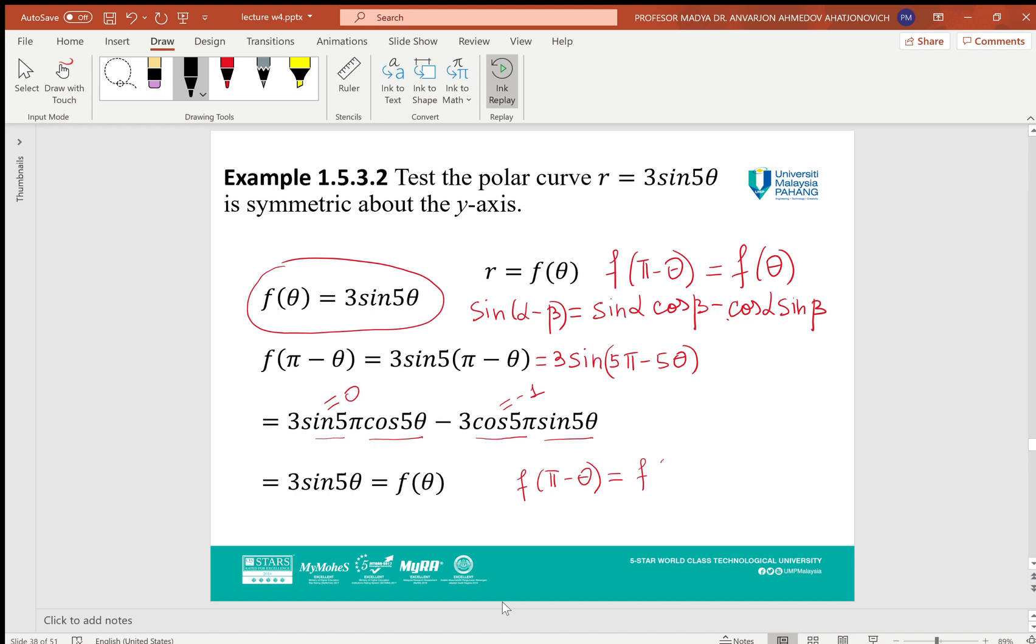Then we open the brackets using this formula, and taking into account that sin(5π) is 0 and cos(5π) is -1, we get 3sin(5θ), which is exactly f(θ), and which proves that our function is symmetric about the y-axis.